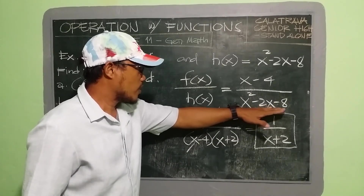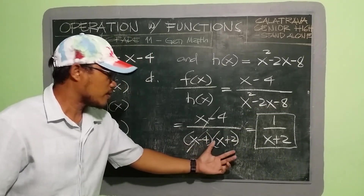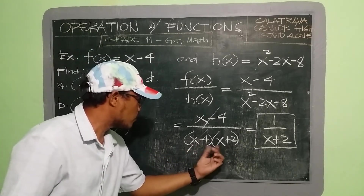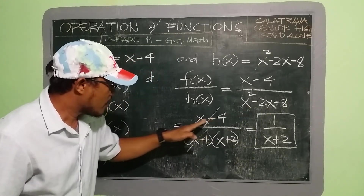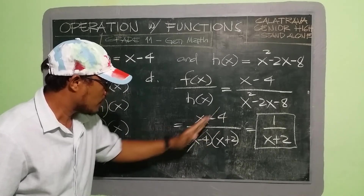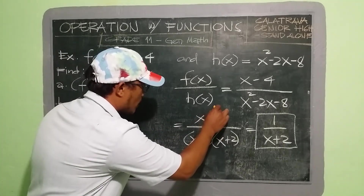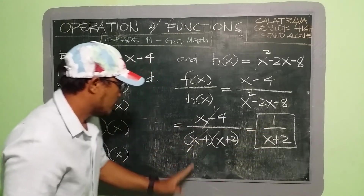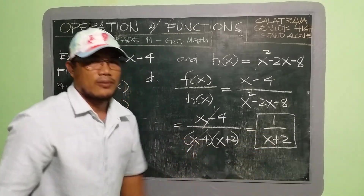The factor of x² − 2x − 8 is (x − 4)(x + 2). Since we have the same (x − 4) in numerator and denominator, we cancel them out, leaving 1 in the numerator. So the final answer is 1 over (x + 2).